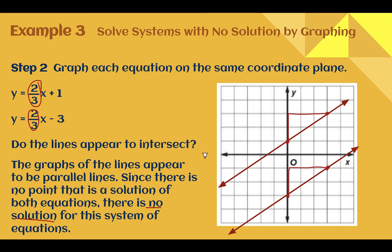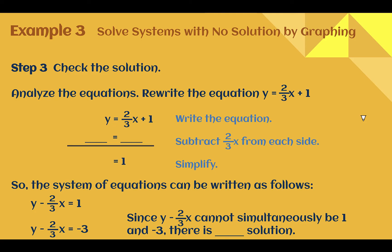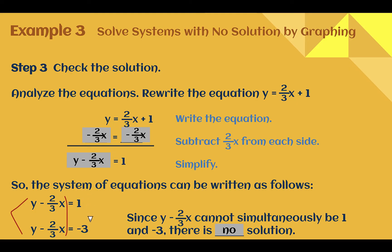No intersection means no solution. To double-check: rewrite the second equation so it looks like the first. Subtracting two-thirds x from both sides gives y minus two-thirds x equals 1. Now comparing: the left sides are both y minus two-thirds x, but the right side of one equation equals 1 and the other equals negative 3. Something cannot equal both 1 and negative 3 at the same time — they're not equal — so there is no solution.